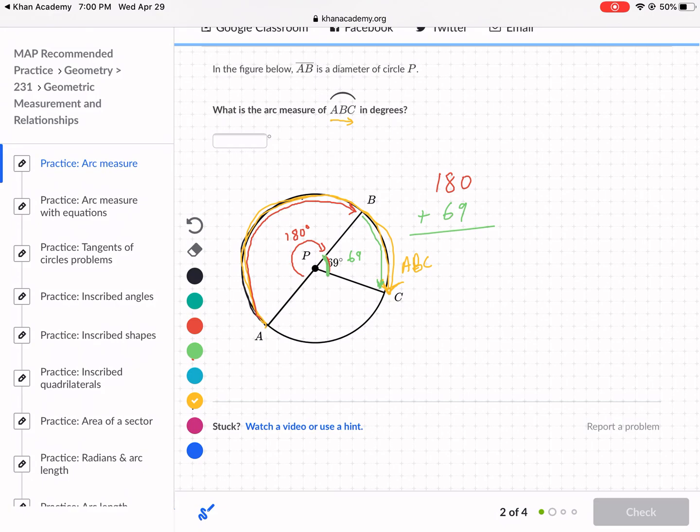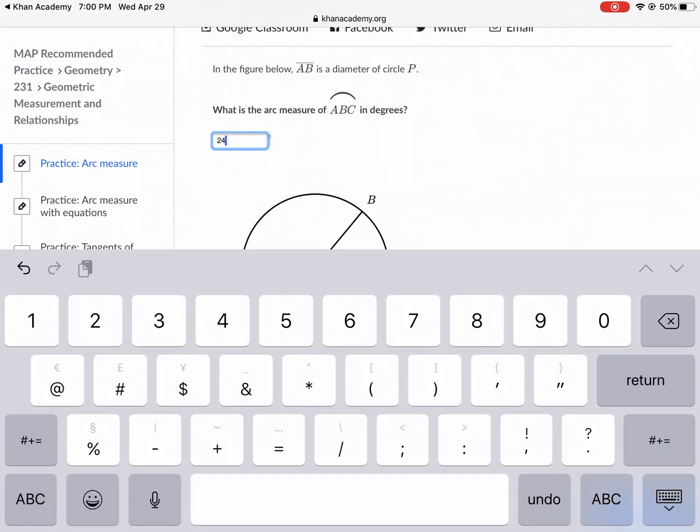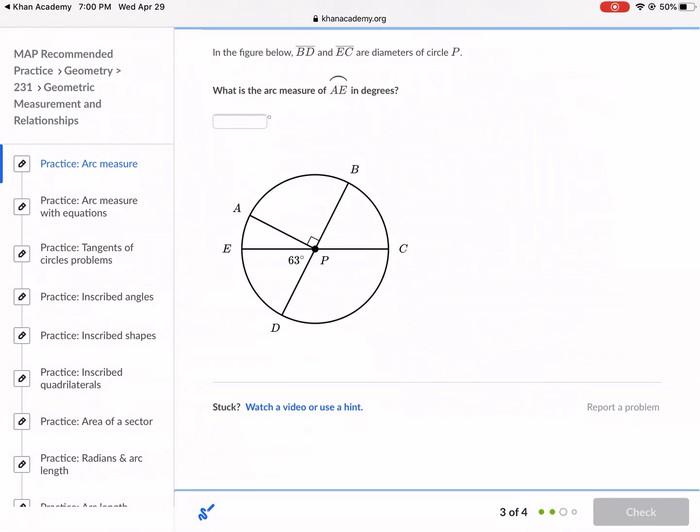So 180 plus 69, enter. And we get 249 degrees. So we can go ahead and plug that in for an answer, 249. Bingo. All right, let's do one more, just because I think you guys are getting the hang of it.